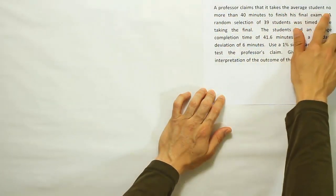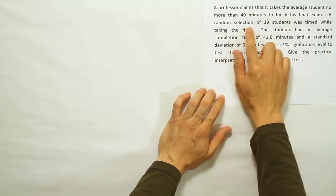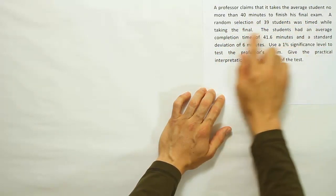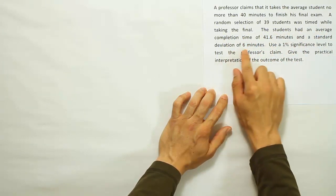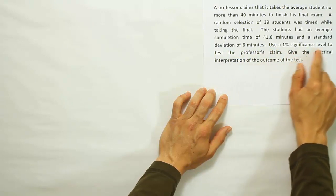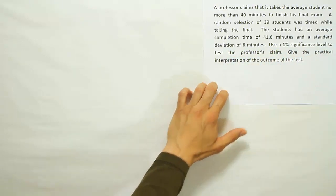A professor claims that it takes the average student no more than 40 minutes to finish his final exam. A random selection of 39 students was timed while taking the final. The students had an average completion time of 41.6 minutes and a standard deviation of 6 minutes. Use a 1% significance level to test the professor's claim. Give the practical interpretation of the outcome of the test.